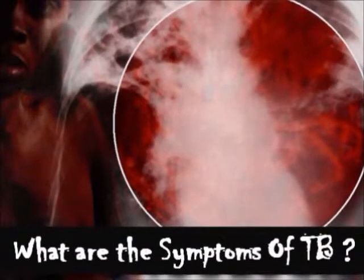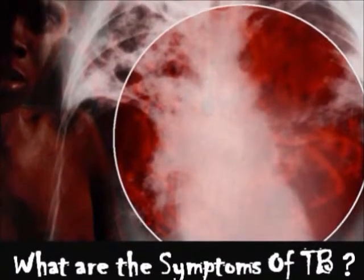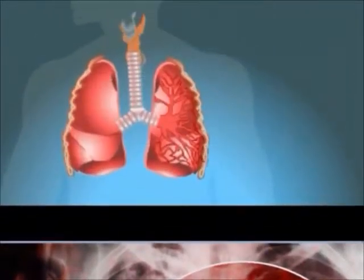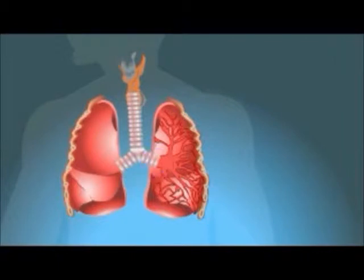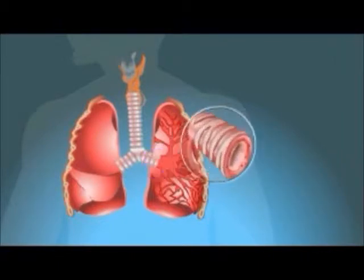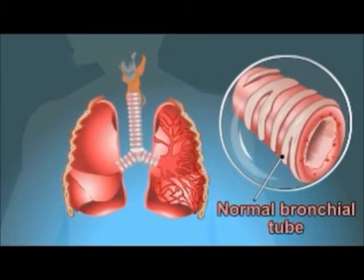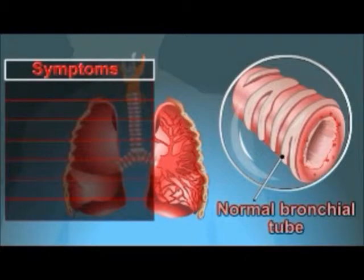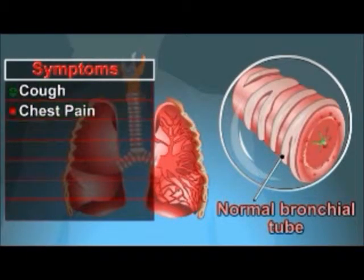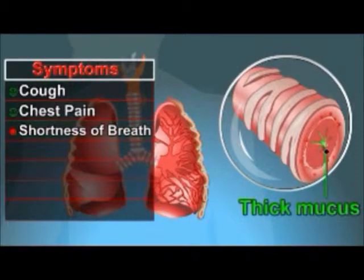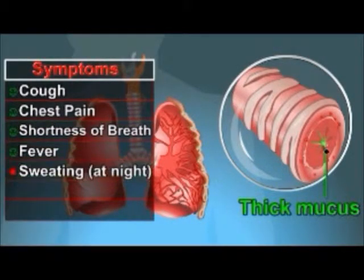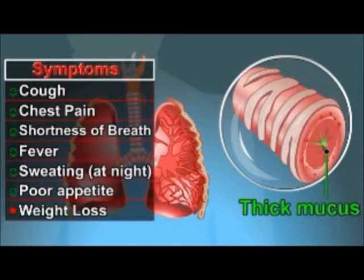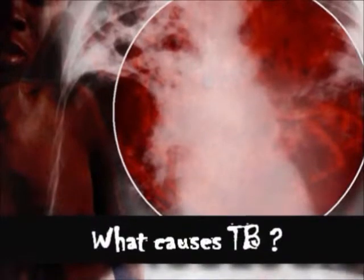What are the symptoms of TB? It can cause a pleural effusion, which is a collection of fluid between the lungs and chest wall. The symptoms include cough, chest pain, shortness of breath, fever, sweating at night, poor appetite, and weight loss.